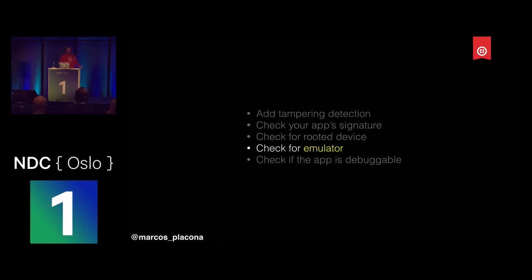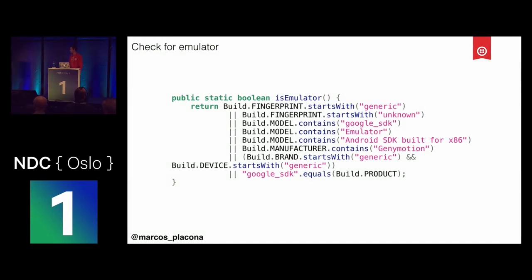Checking for an emulator is also something I would block, because I never built an application where I felt there was a need for someone to use it on an emulator — I build applications to run on phones. As it turns out, most hacks come from emulators because it's much easier to control an application and use proxies from an emulator. Checking for emulators is fairly simple — you can have a utility function where you're checking things like: is this running in a generic environment, is it in an emulator, does it say Genymotion? It's almost like checking headers of where requests are coming from.